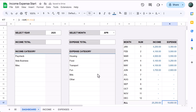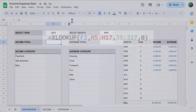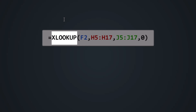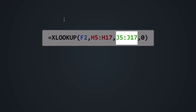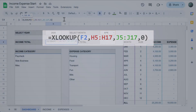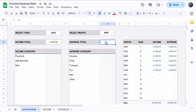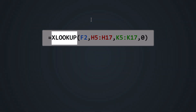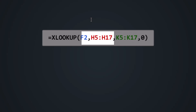Now for the income and expense totals. Select cell C4 and enter this formula. Here we're using the XLOOKUP function to look at the selected month in cell F2, find that value among the month list in H5 through H17, and return the corresponding income number. Next, select cell F4 and enter this formula — here we use XLOOKUP to return the corresponding expense value based on the selected month.